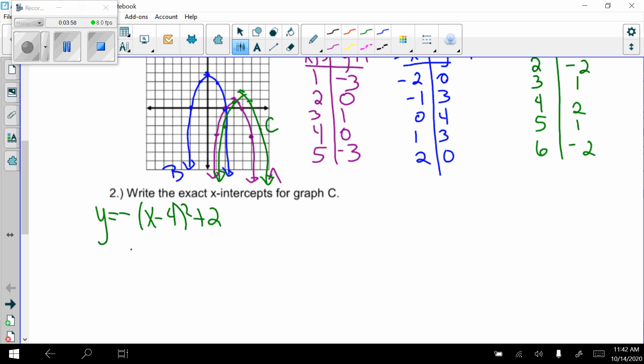It's already factored, so let's just set it equal to 0. So negative x minus 4 quantity squared plus 2 equals 0.